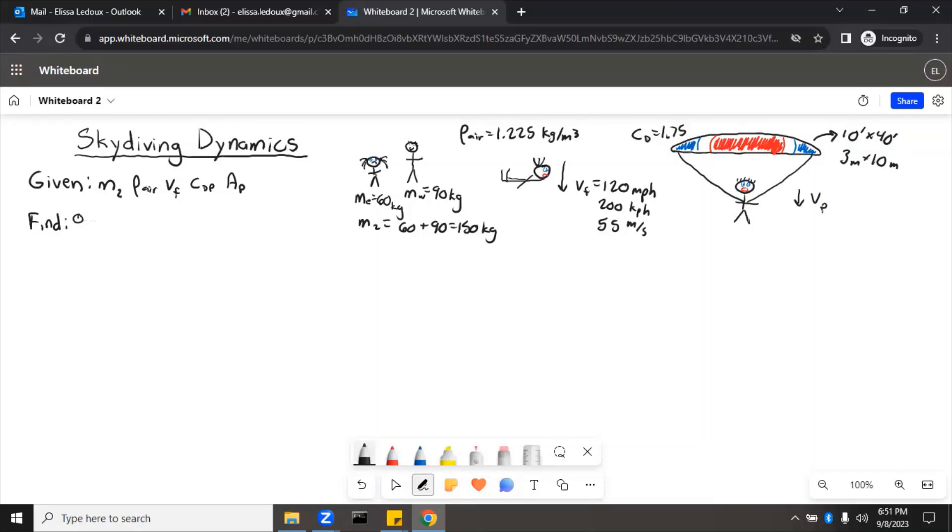First, we'll find CD for freefall. Second, we'll find terminal velocity, say VP, of hitting the ground with the parachute.